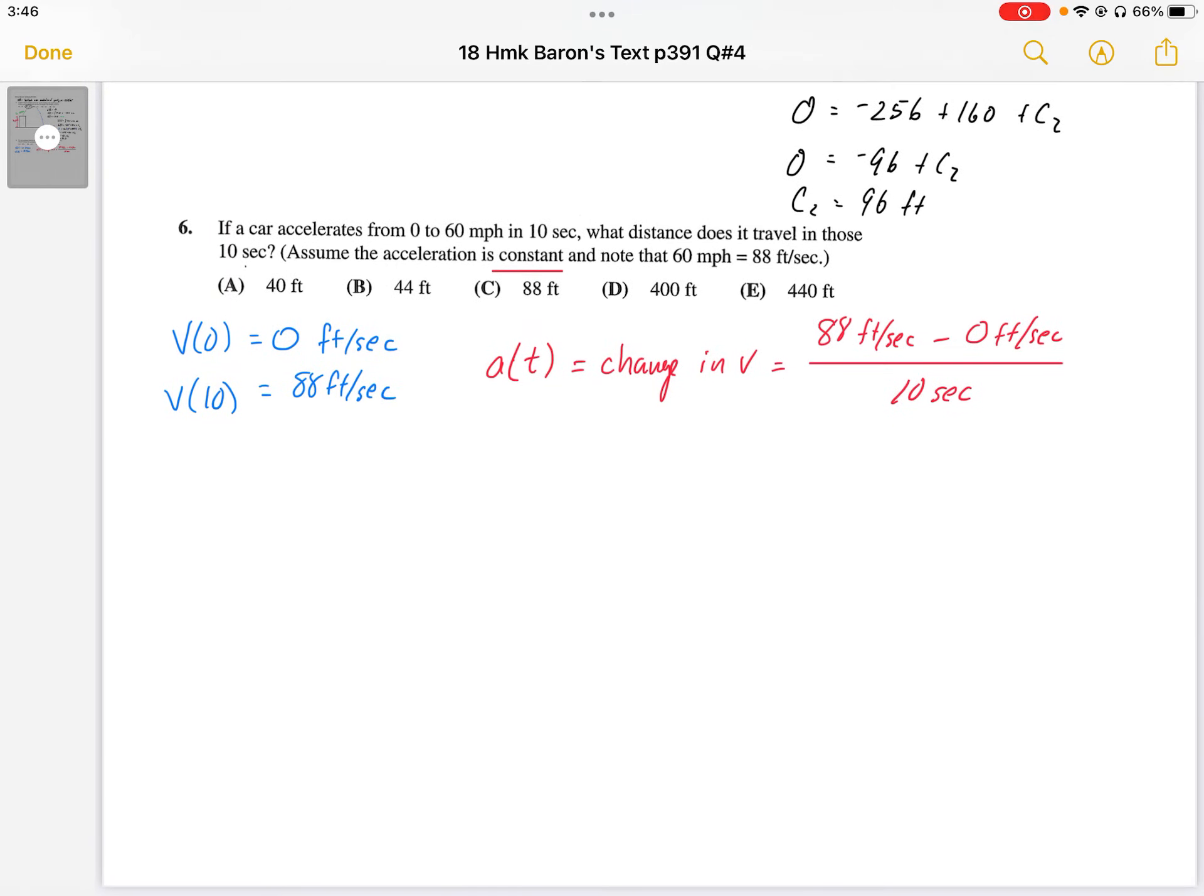Number 6 on page 391. If a car accelerates from 0 to 60 miles per hour in 10 seconds, what distance does it travel in those 10 seconds? Assume the acceleration is constant and note that 60 miles per hour is 88 feet per second.